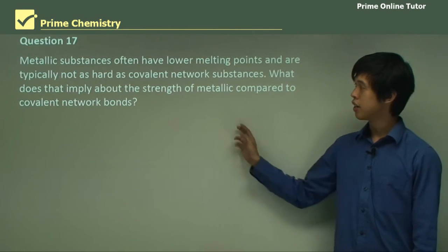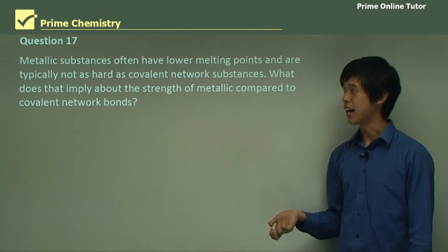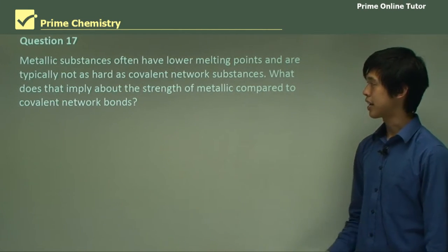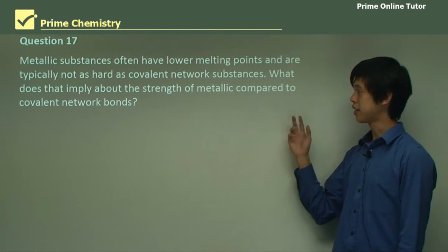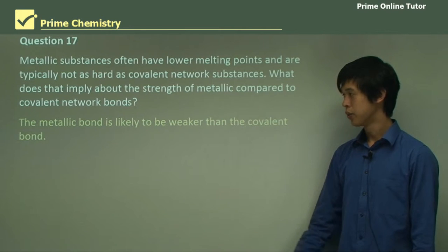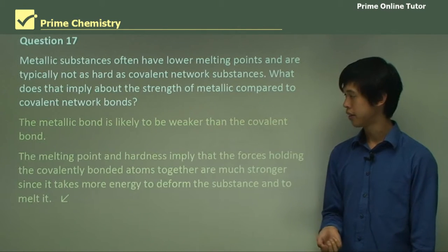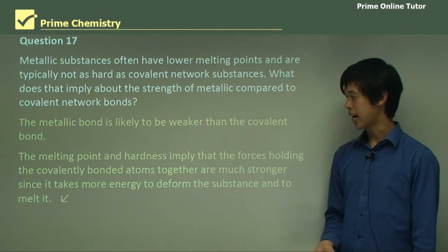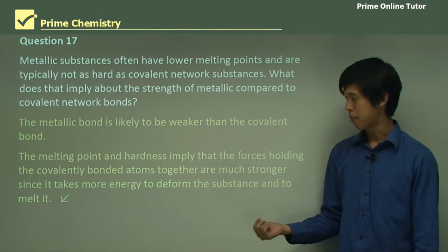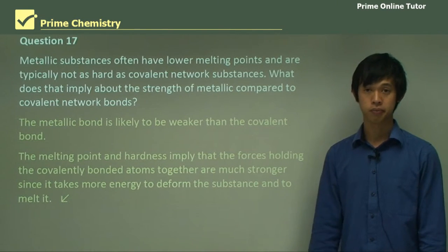Question 17: metallic substances often have lower melting points and are typically not as hard as covalent network substances. What does that imply about the strength of the metallic compared to covalent network bonds? The metallic bond is likely to be weaker than the covalent bond. The melting point and hardness imply that the forces holding covalently bonded atoms together are much stronger, since it takes more energy to deform the substance and to melt it.